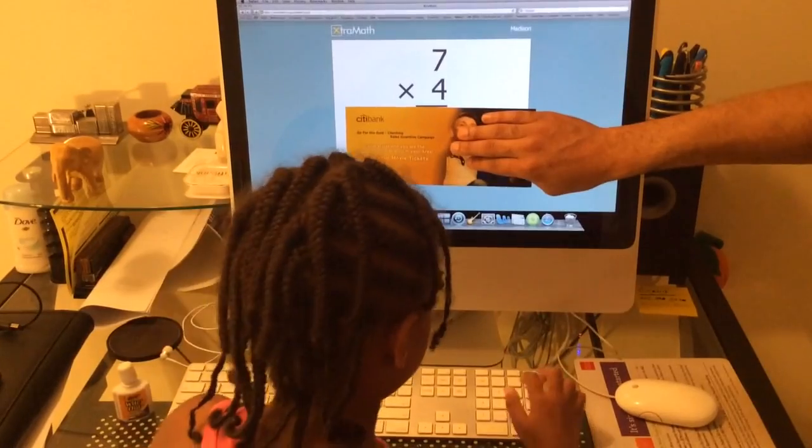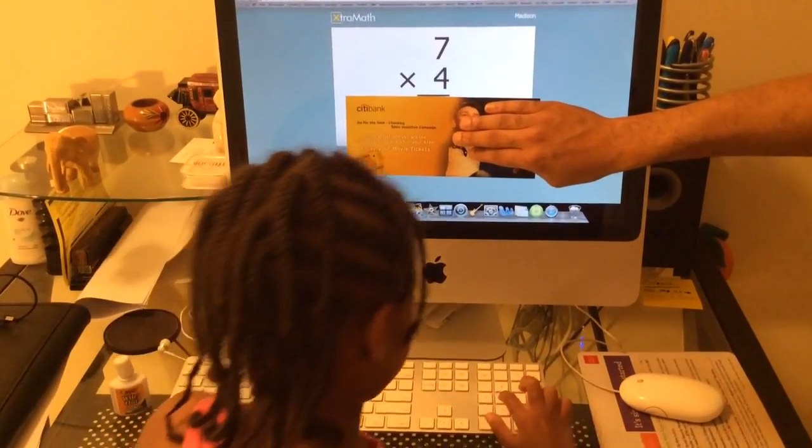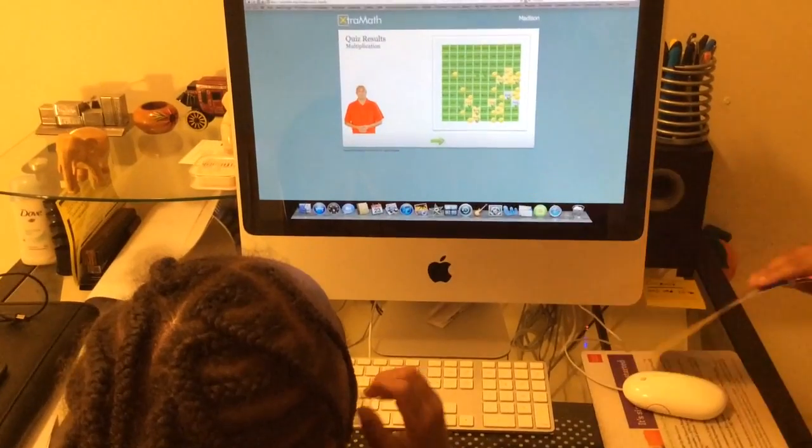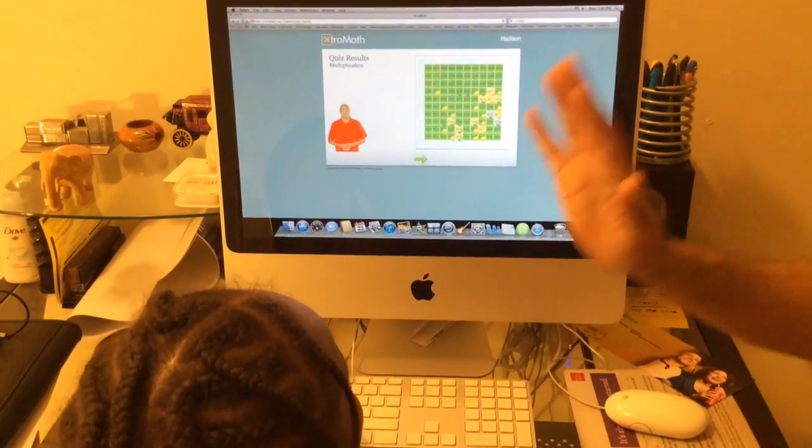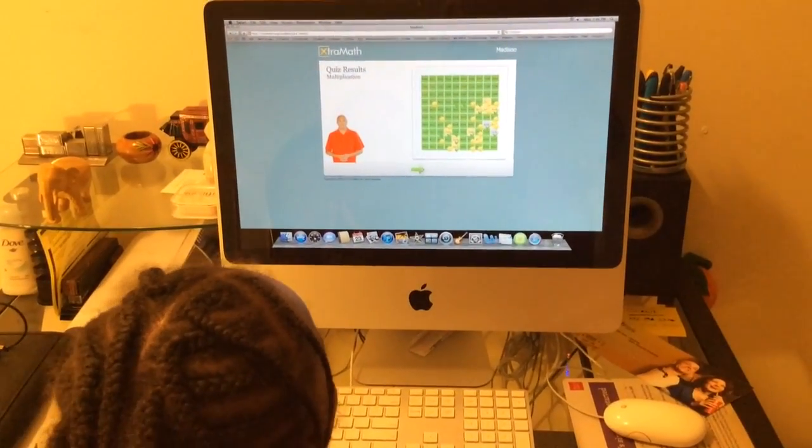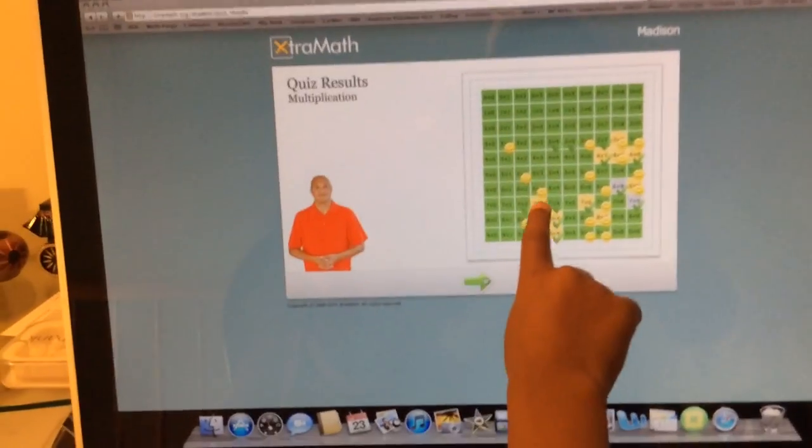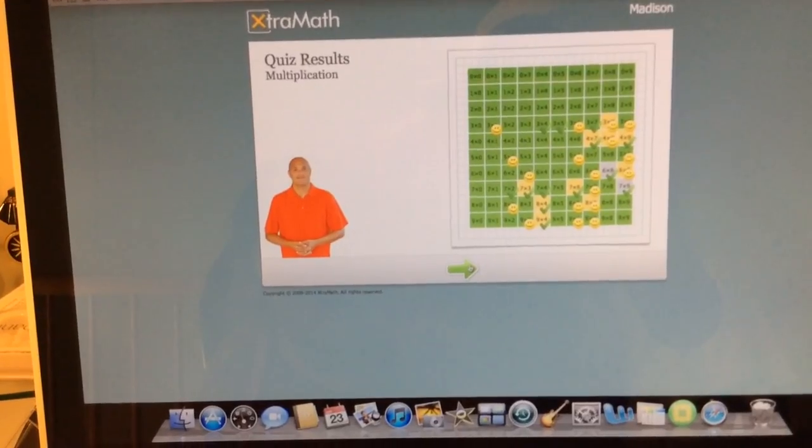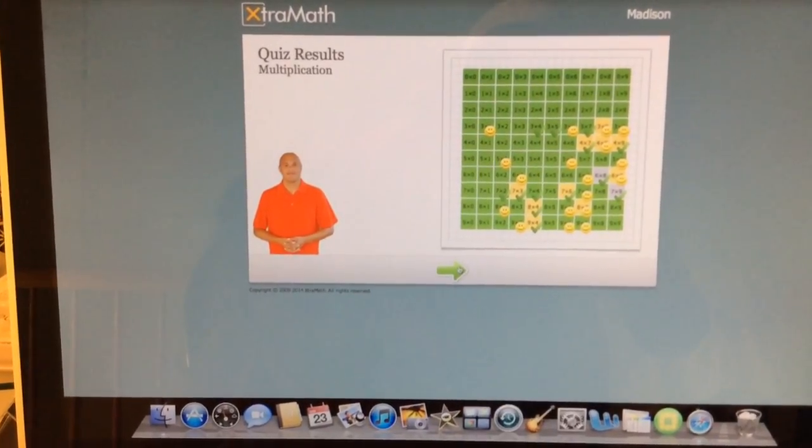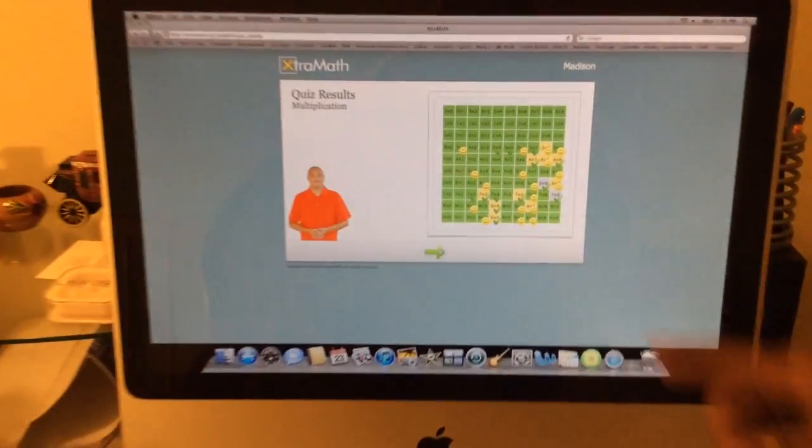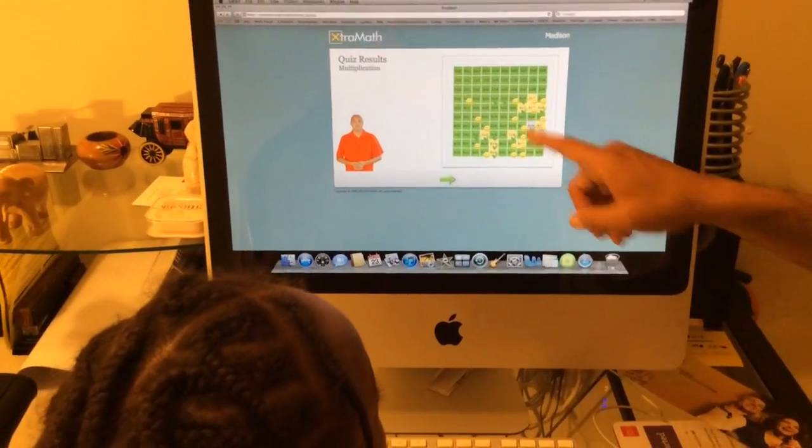You got it. Very good, Madison. Very good job. Okay. Six, I think. That's right. Oh! Nine times eight! You got them. And look how many you have left now. Only two gray left.